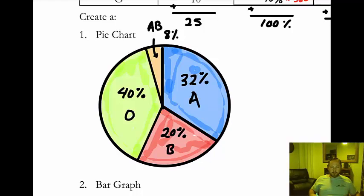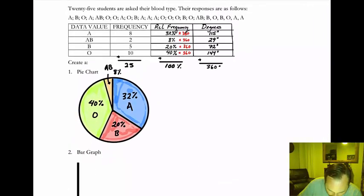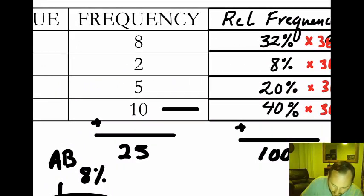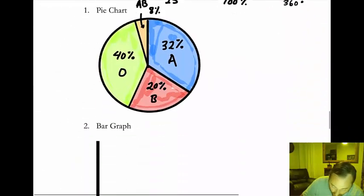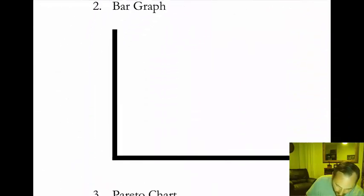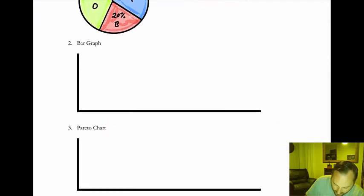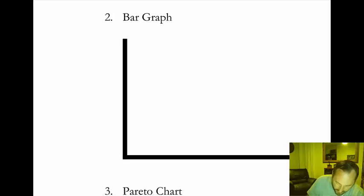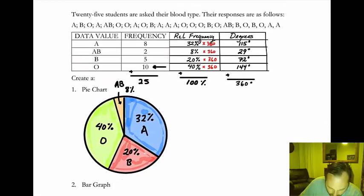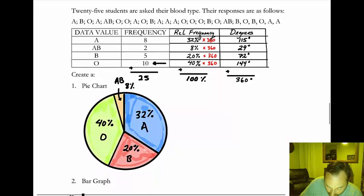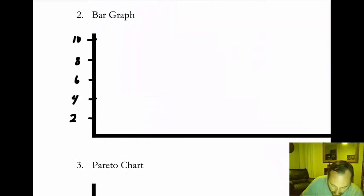The next thing we want to do is the bar graph. I'm going to grab those frequencies. The peak goes up to the greatest frequency, which is 10. So I'll use that for my Y-axis. I'll count by twos: 2, 4, 6, 8, 10 — a nice even scale. Now I can go create my bars. The frequency is 8 for type A, so there's my A bar. Next, type AB at a frequency of 2.